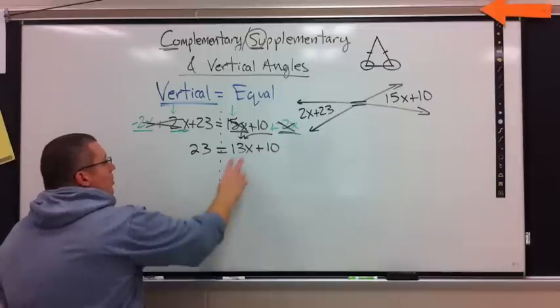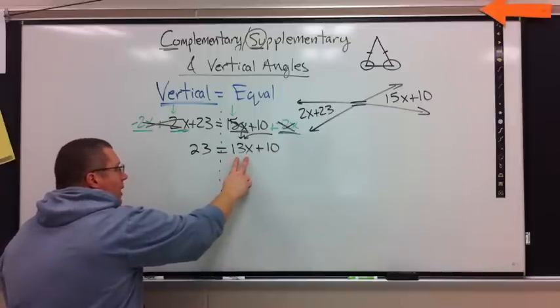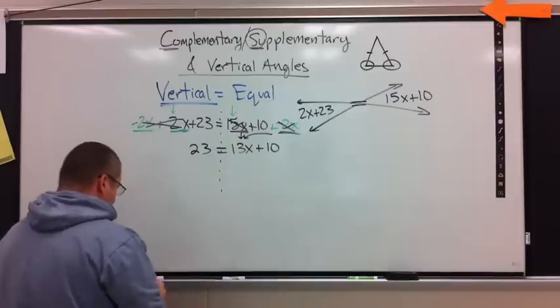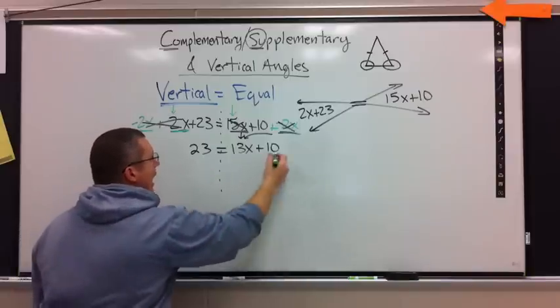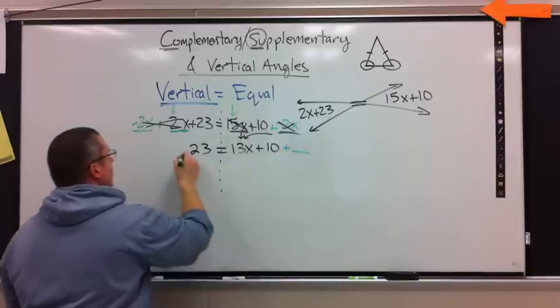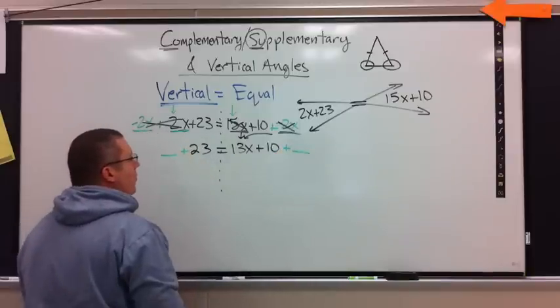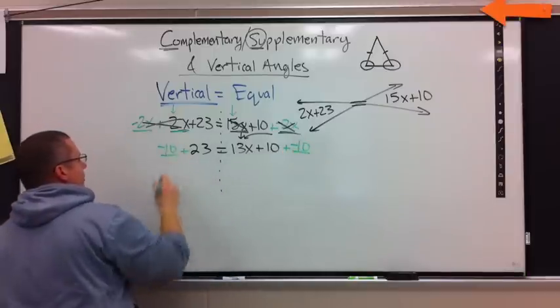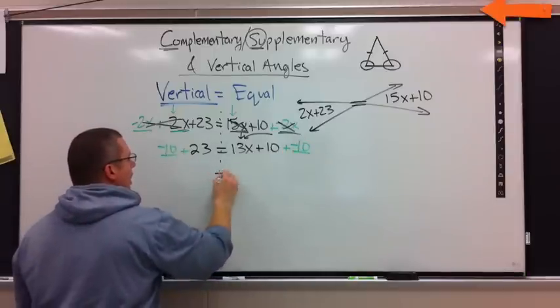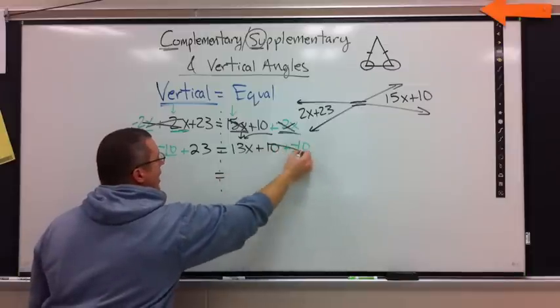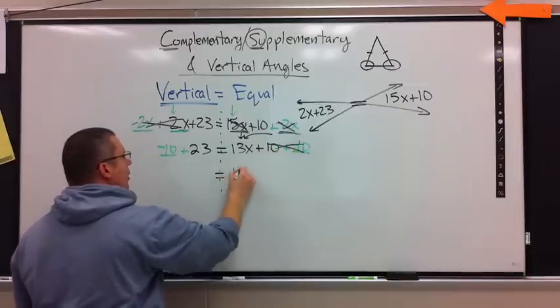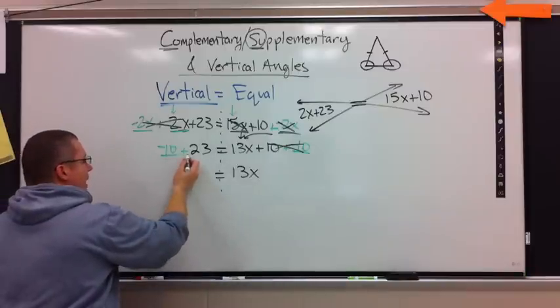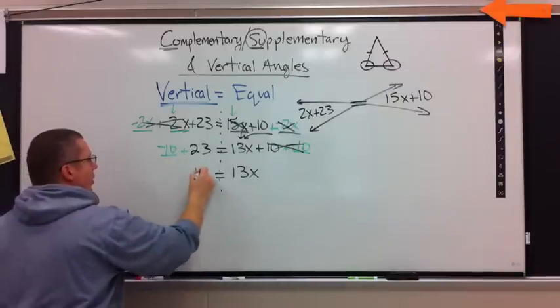So, now I have variables on one side, which is a great thing. That's what I need. But, I have to get rid of an added number and a times number. How do I get rid of an added number first? Added 10, add the opposite. Negative 10. Negative 10. On the right-hand side, 10 plus negative 10 is 0. I get 13X on this side. Negative 10 plus 23 is 13.